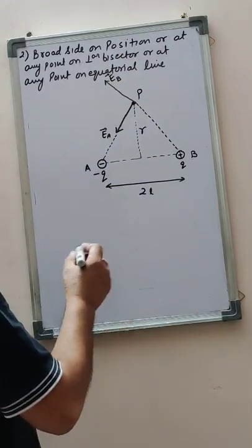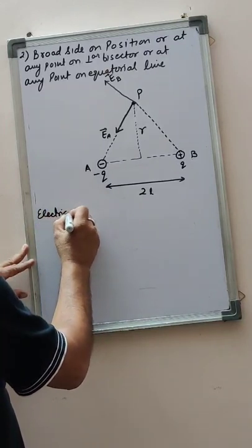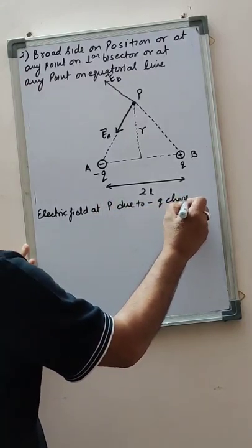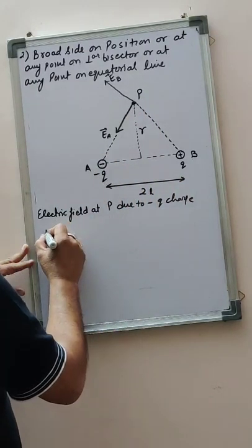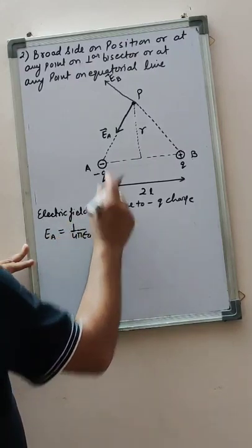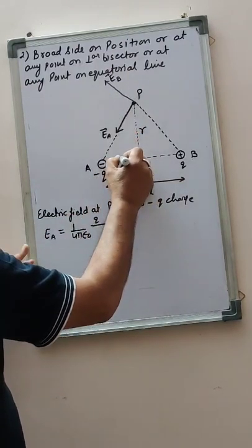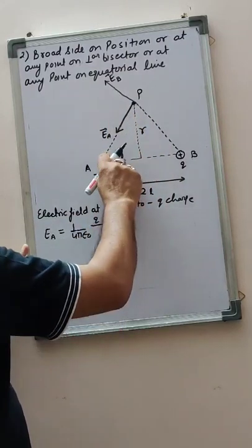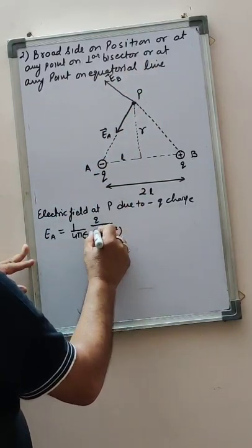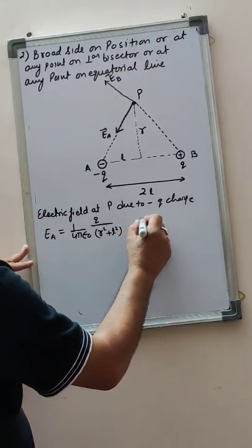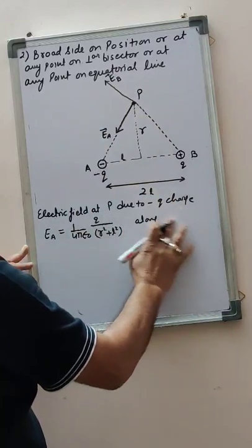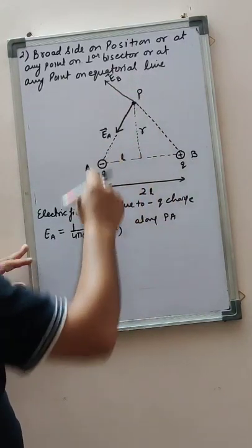We'll find the electric field values first. Electric field at P due to minus q charge: Ea equals 1 by 4 pi epsilon naught, q upon the distance. This distance — with l and r — will be under root of r square plus l square, so it will be r square plus l square. The field is directed along PA.